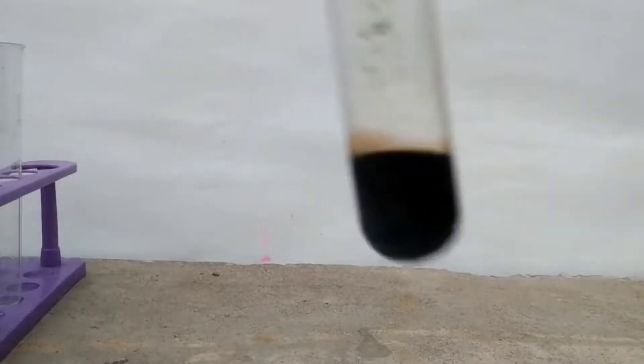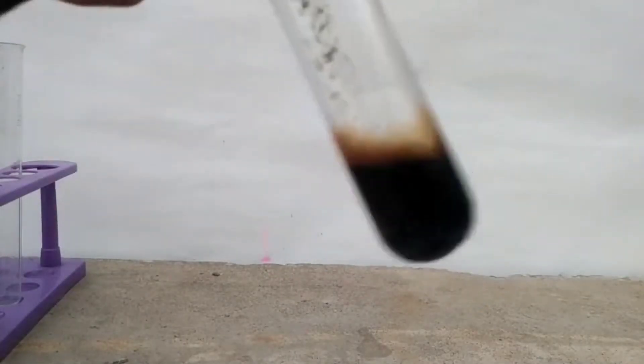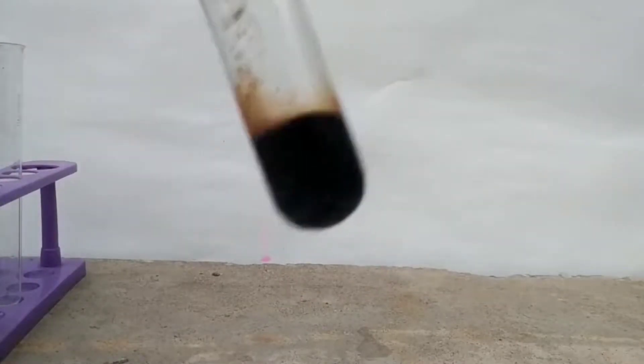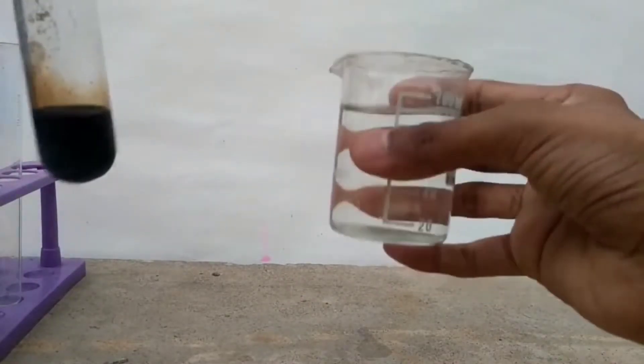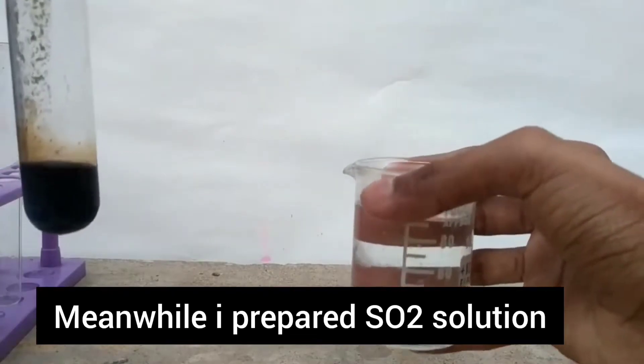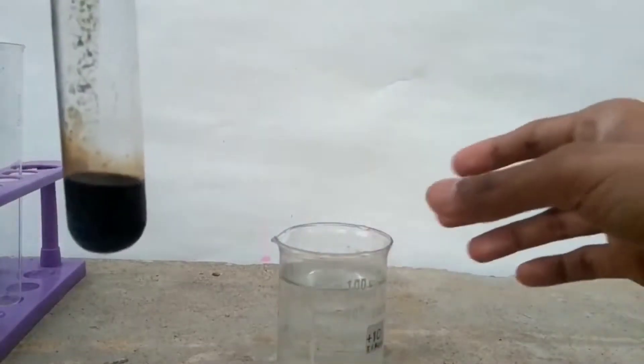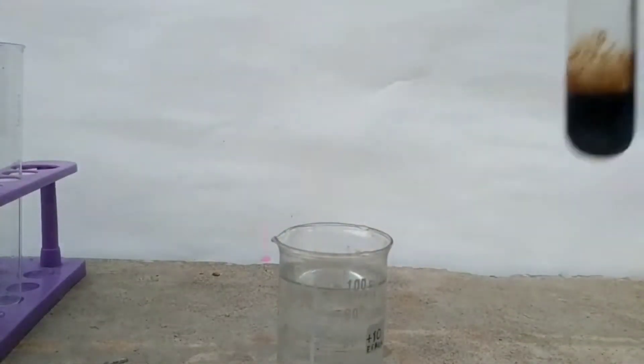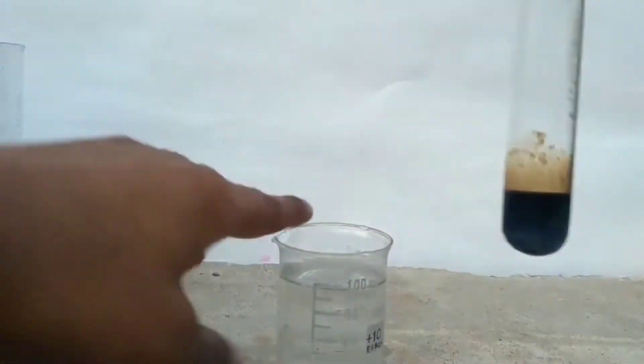Now I took this brown solution and my sulphur dioxide solution that I prepared by bubbling sulphur dioxide in water, and I poured this solution into the sulphur dioxide solution.